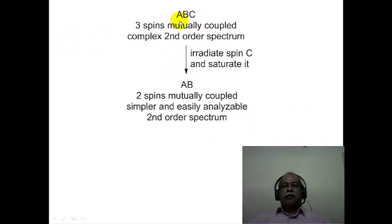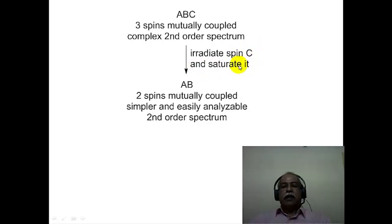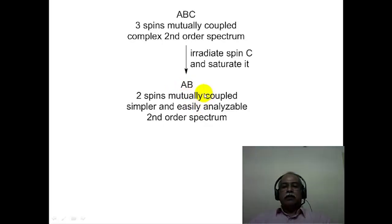To illustrate: in an ABC three-spin system mutually coupled to each other, the spectrum appears as a complex second order pattern. If one irradiates spin C using a second radiofrequency at C's resonance frequency, spin C becomes saturated and decouples from A and B. The ABC system simplifies to an AB system — a two-spin second order spectrum that is much more easily analyzed to extract delta-A, delta-B, and J-AB.